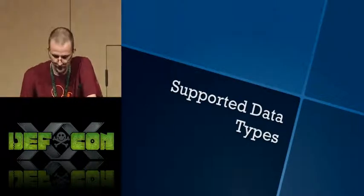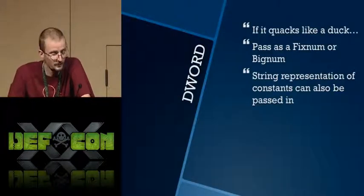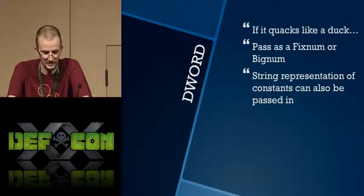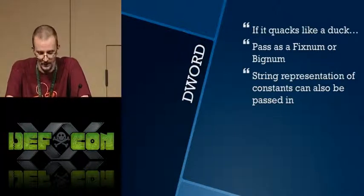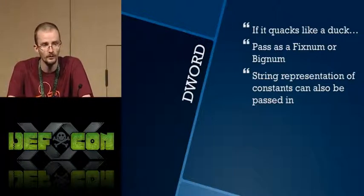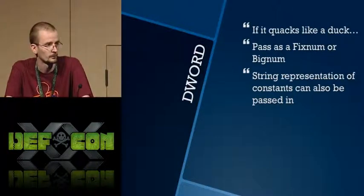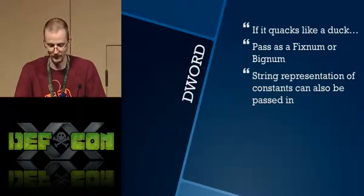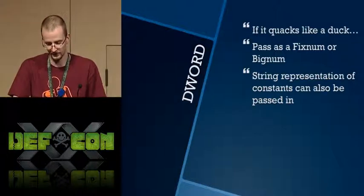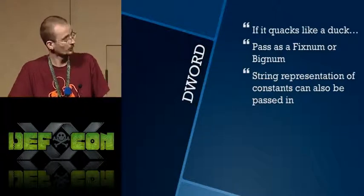The most basic and common data type you'll see is a DWORD. The general rule of thumb is: if it quacks like a duck, treat it as a DWORD. This goes for pointers, handles — all the weird things that Ruby doesn't have a concept of, like function pointers or handles. In reality, all it is is a number. From the Ruby side, for a DWORD parameter we just pass in a fixed number, or if it's one of those defined constants, we can pass in a string representation of that constant and Railgun will interpret it for us.